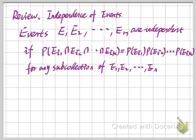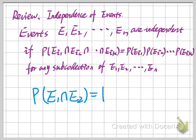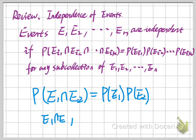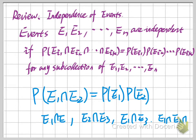If we only have two events like E1 and E2, then we just need the probability of the intersection of E1 and E2 to equal the product of their two probabilities. However, if we have E1, E2, and E3, then we should check all sub-collections — the intersection of E1 and E2, the intersection of E2 and E3, the intersection of E1 and E3, and also the intersection of E1, E2, and E3. So the more events you have, the more sub-collections there are, and the equations we need to check become much more complicated.